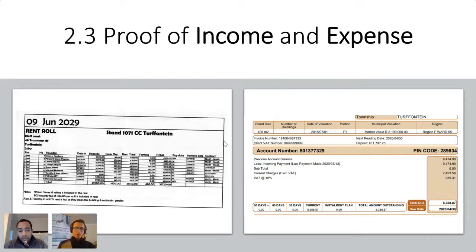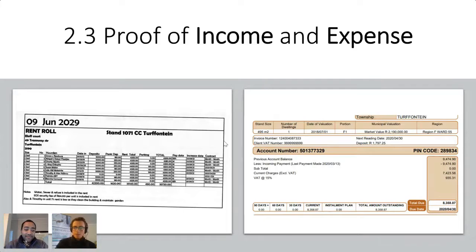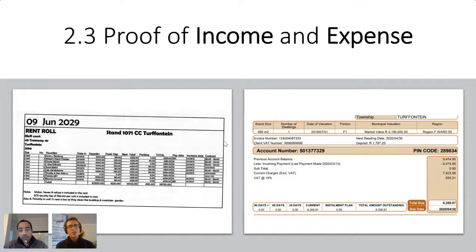Over time you need to be able to say: prove that I can make a hundred thousand rand rent, prove what the rates and taxes are, prove what the levies are. On the bottom left you can see a rent roll — proof of income for a block of flats that Thierry and I went to view. You can see the deposits, the rent total, and parking, showing we can make thirty-five thousand seven hundred and twenty rand in income. On the right is a snippet of a COJ bill showing rates and taxes, water, electricity, and sewage expenses. Running the wrong numbers means you're not making an informed decision.